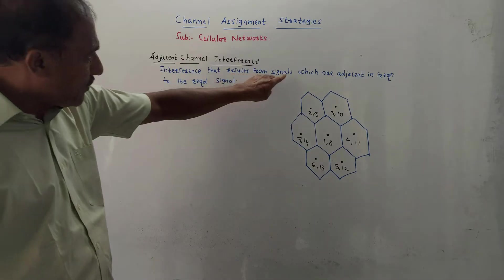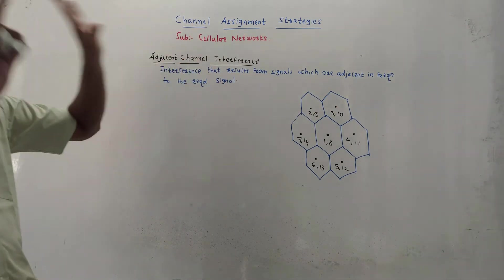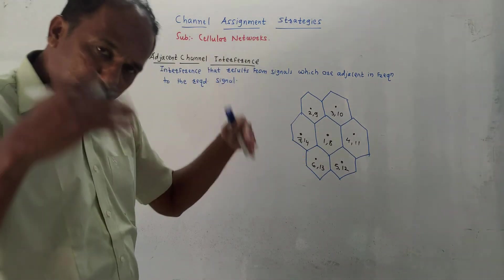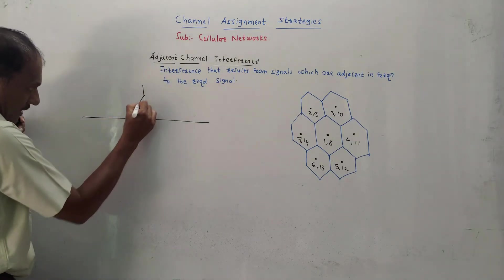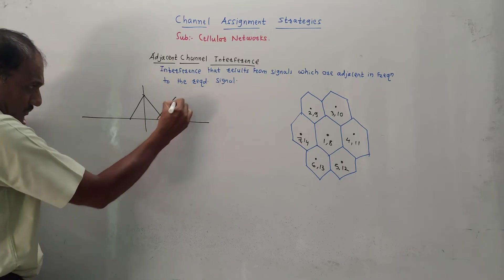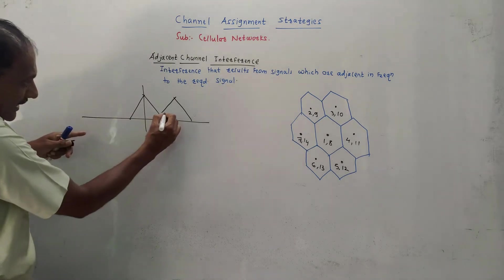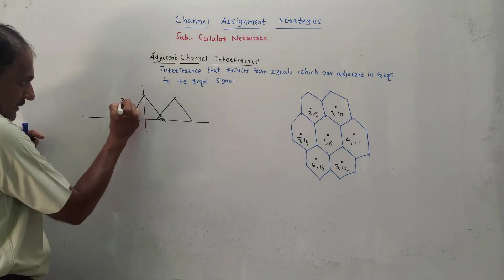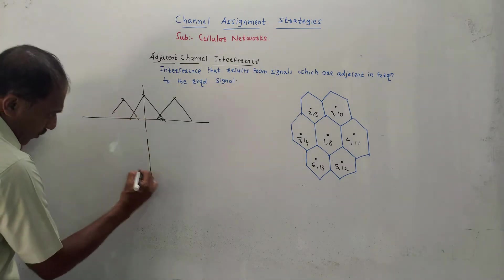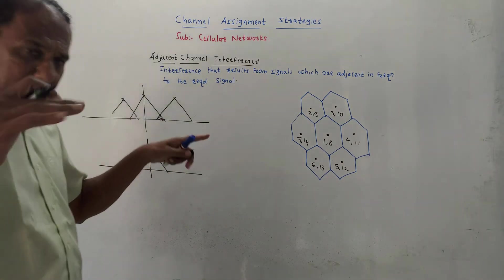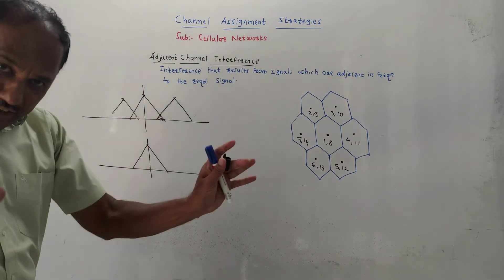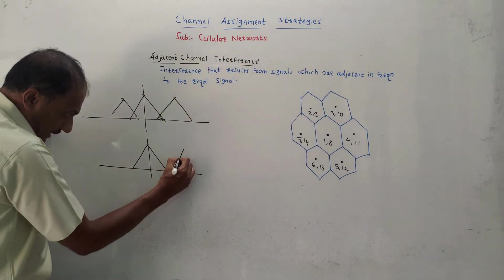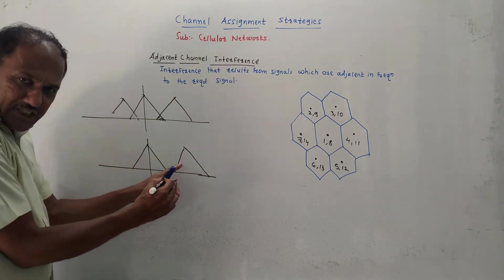The second type of interference is adjacent channel interference, defined as interference from signals that are adjacent in frequency to the required signal. Think of a frequency spectrum — if the desired spectrum overlaps with a neighboring spectrum that is adjacent in frequency, mixing occurs. This is adjacent channel interference. To avoid it, increase the guard band (gap) between two adjacent spectrums.